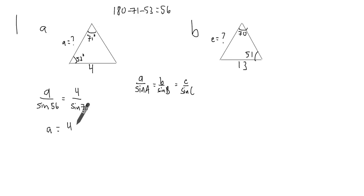Which means A is equal to 4 times sine 56 degrees over sine 71 degrees, which you plug this into your calculator, and you get roughly 3.5.